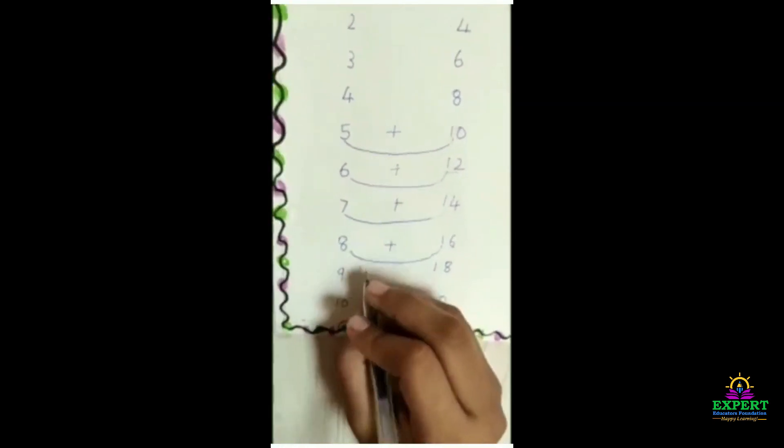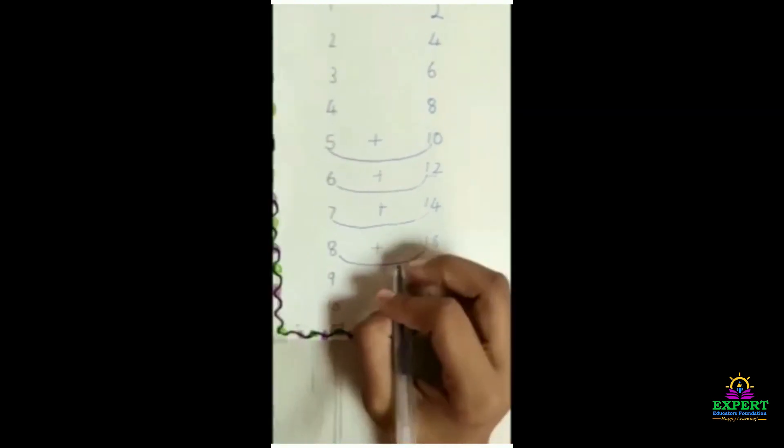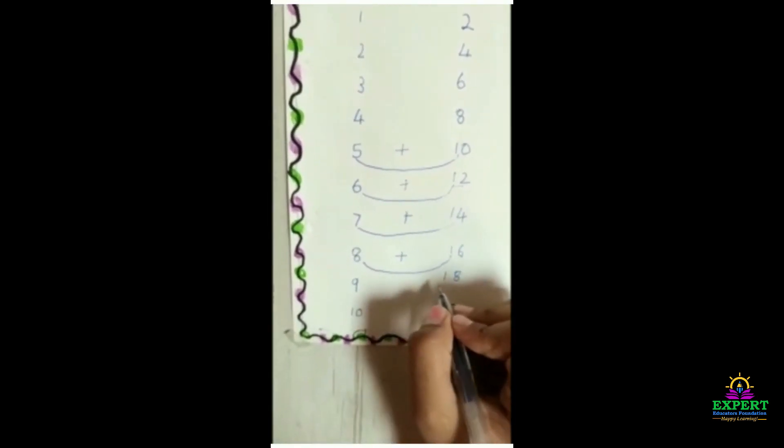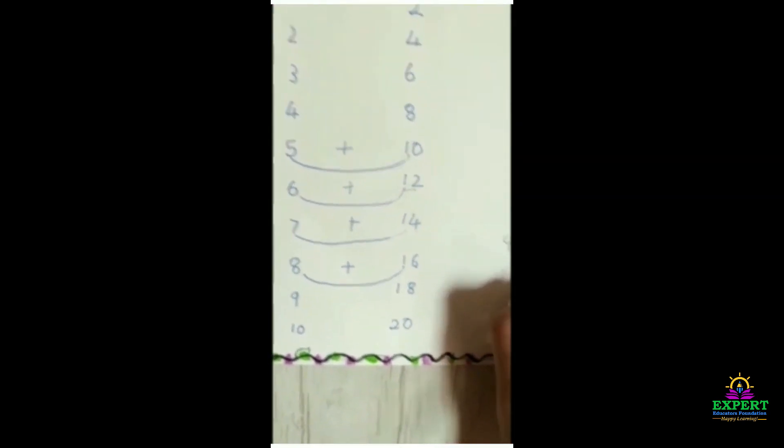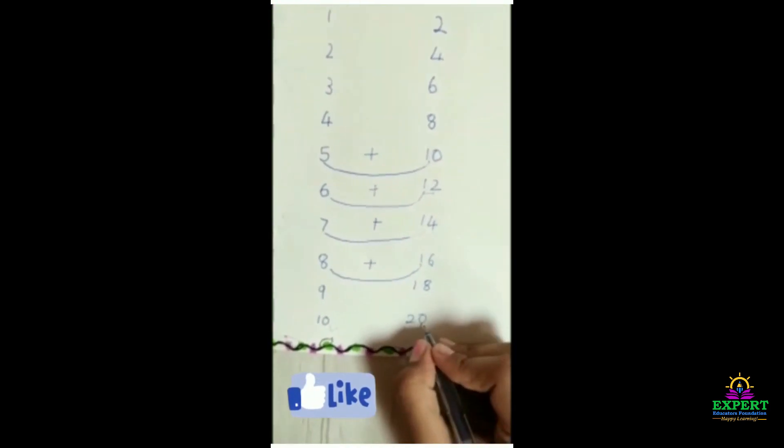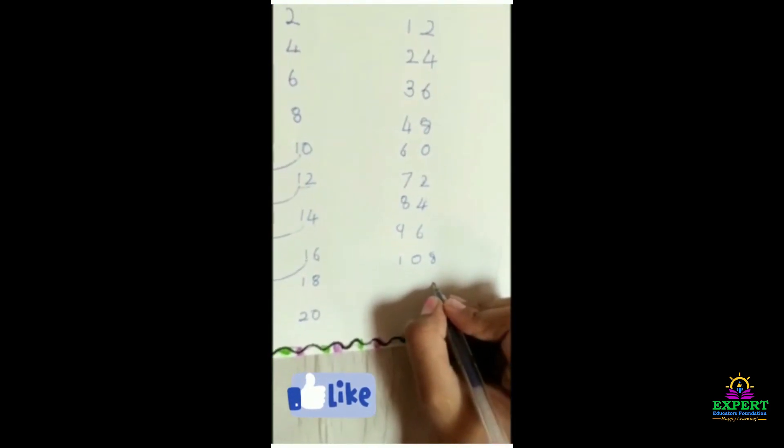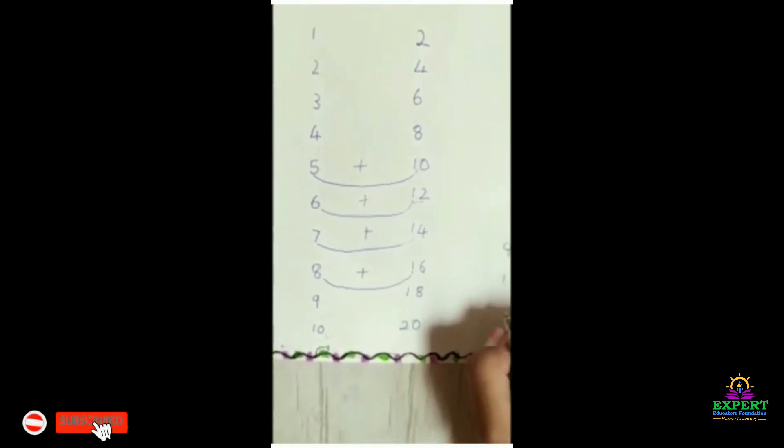Now over here, the last digit is 8. So, we write 8 over here. And 9 plus 1 is 10. 108 is the answer. The last digit is 0. We write 10 plus 1. 10 plus 2 is 12.